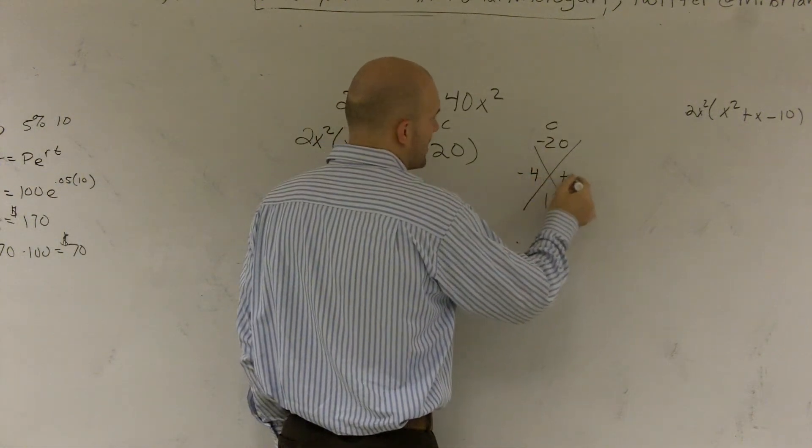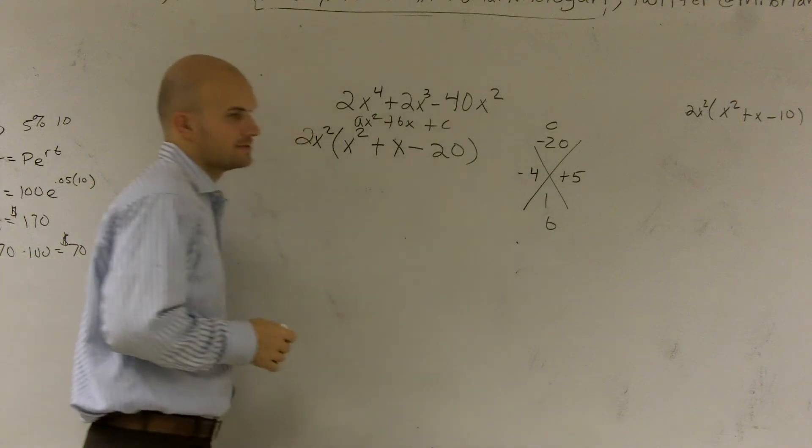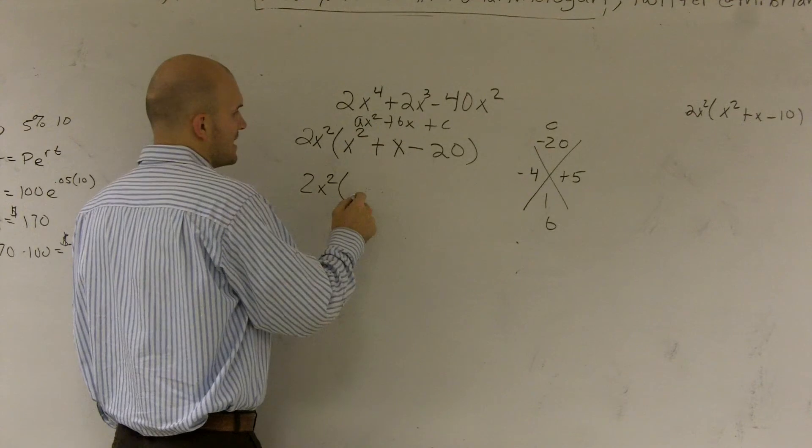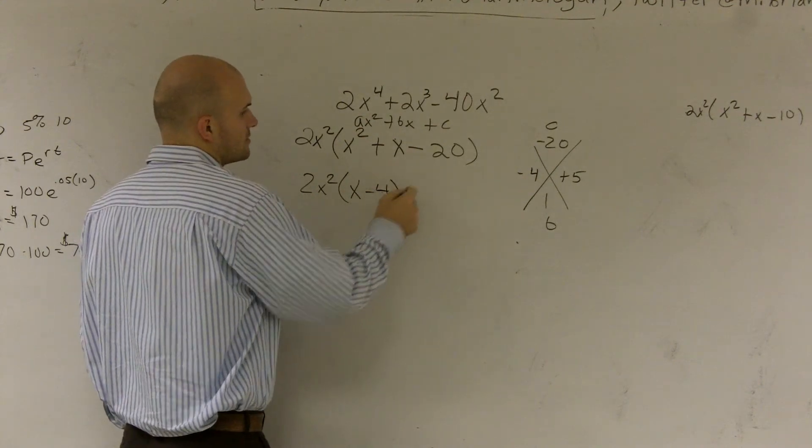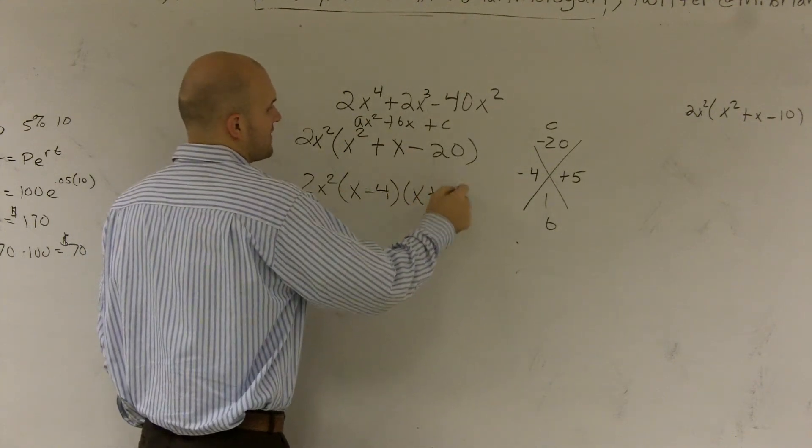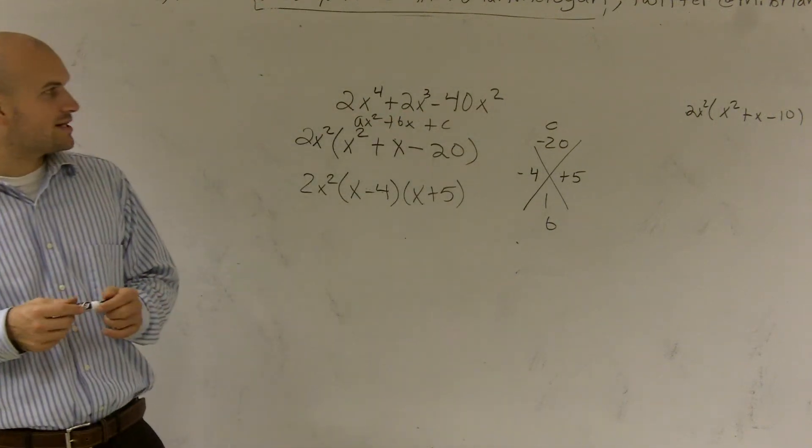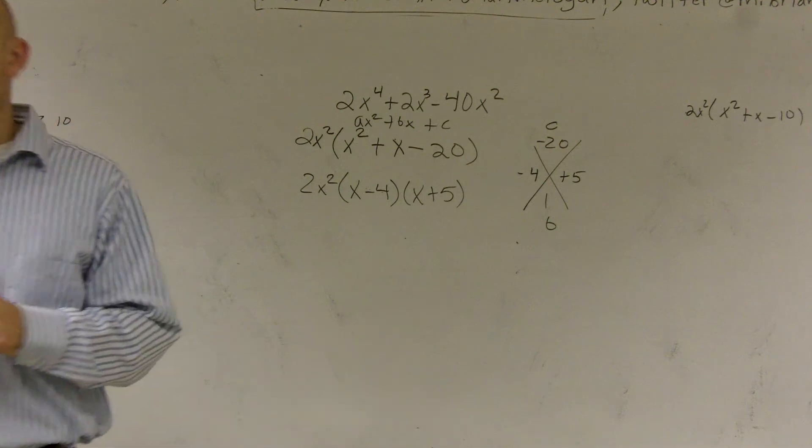Negative 4 and positive 5. So those are my two factors. I can say 2x squared times (x minus 4) times (x plus 5) is how you factor 2x to the 4th plus 2x cubed minus 40x squared.